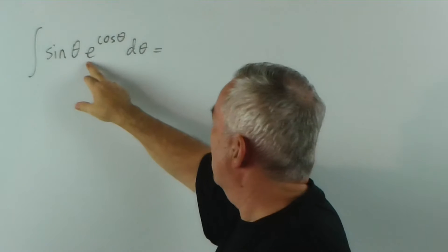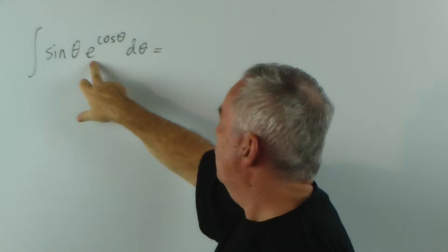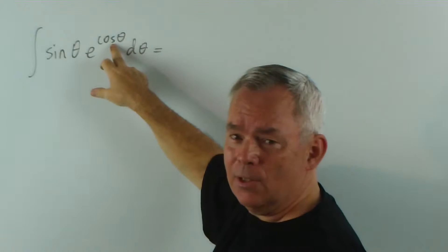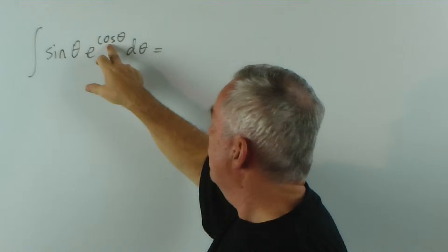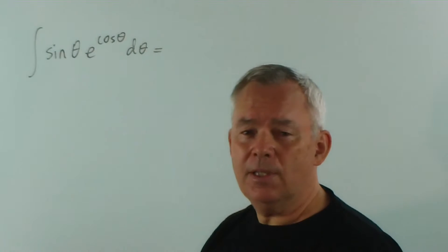The exponential function dominates, in a sense, and if we're going to integrate that, an exponential with a function as its exponent, then we want the derivative of the function out the front. And, goodness me, that's close, isn't it?